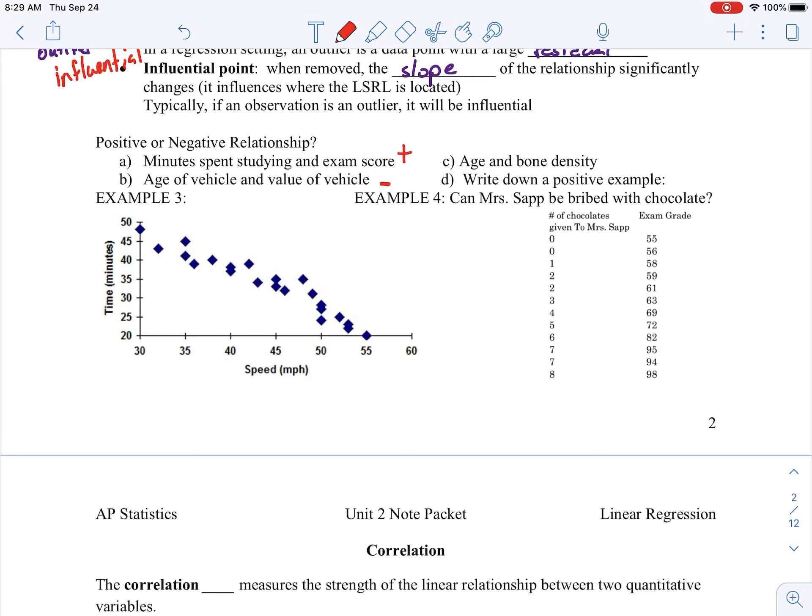Age and bone density might be a little bit different. It says positive or negative. So, as I get older, my bone density tends to decrease as well. If we know, it's going to, that would be a curved relationship. And then we're to write an example. And I'm not too worried about that. So, again, they ask us to, example three and example four are going to be, again, describing the linear relationship.